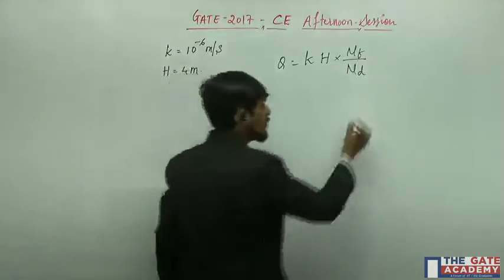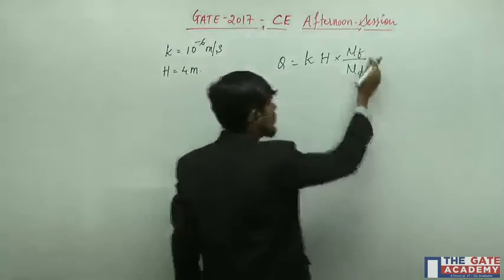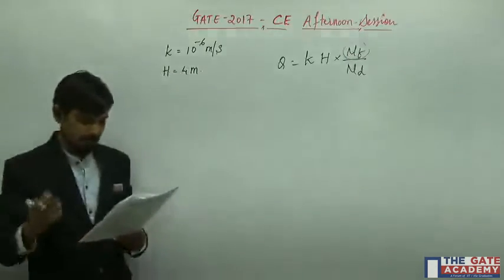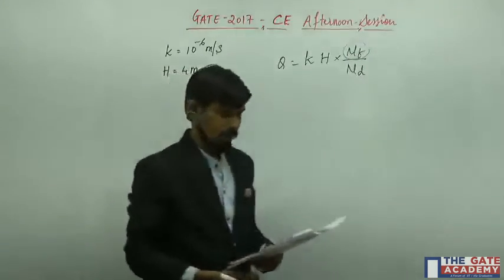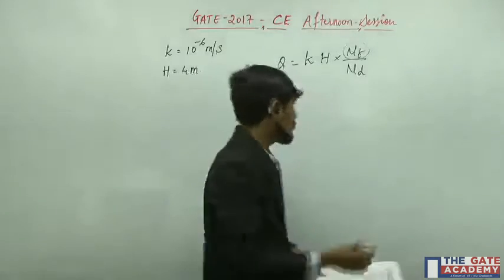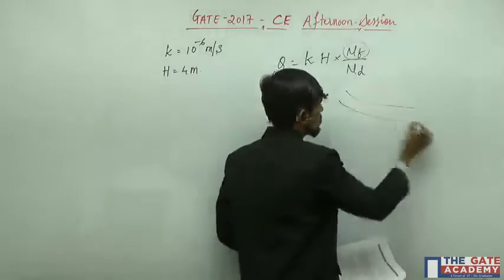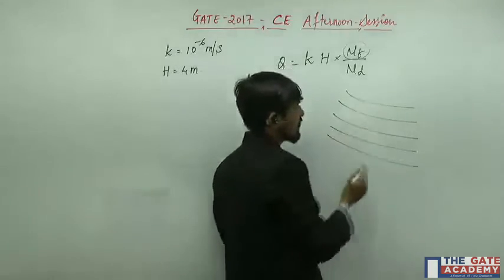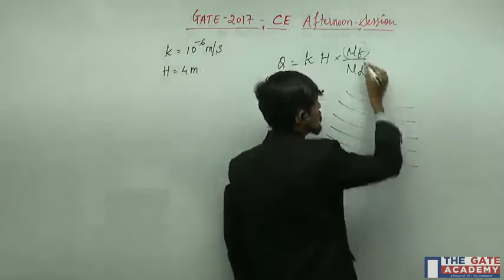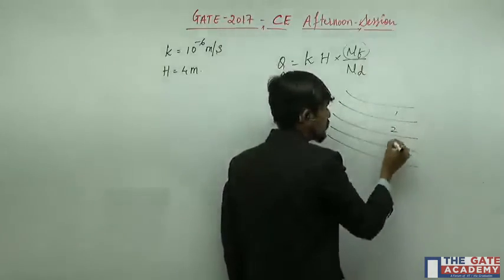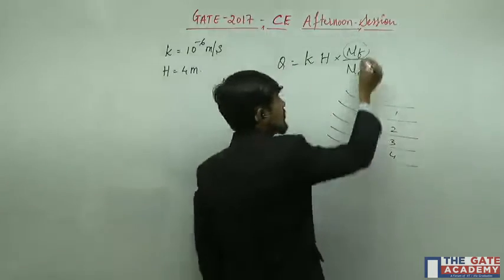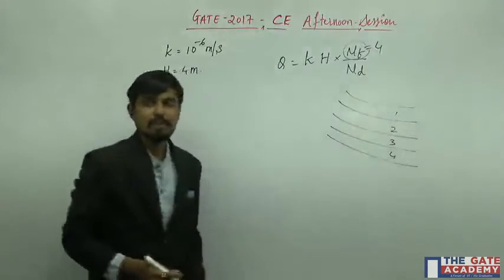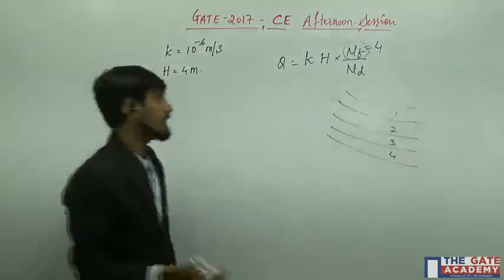If you draw the figure with 5 flow lines, the number of flow channels Nf will be 1, 2, 3, 4 — so Nf equals 4. The number of equipotential lines given is 11.